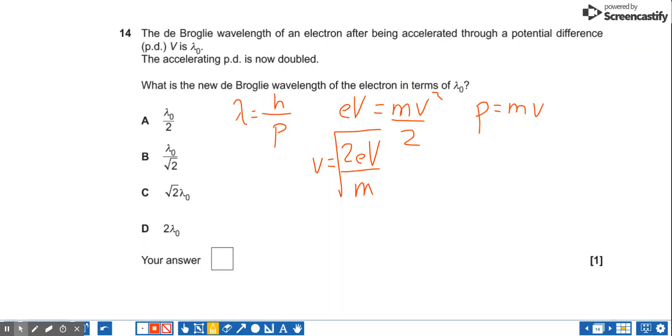So the momentum is going to equal m lots of 2EV over m square rooted. And the wavelength is H over P.